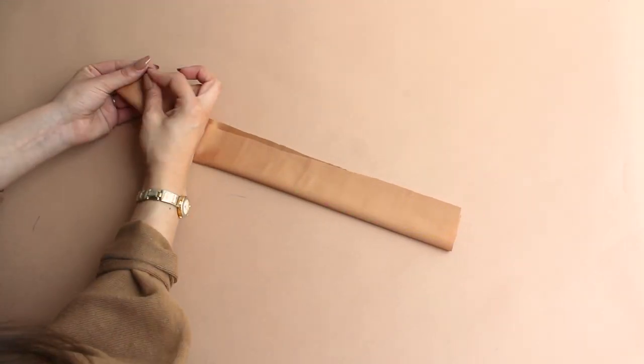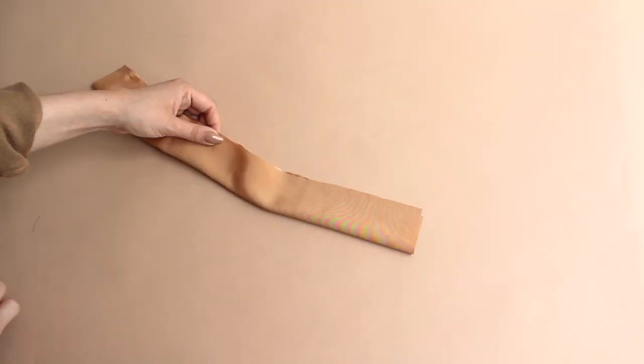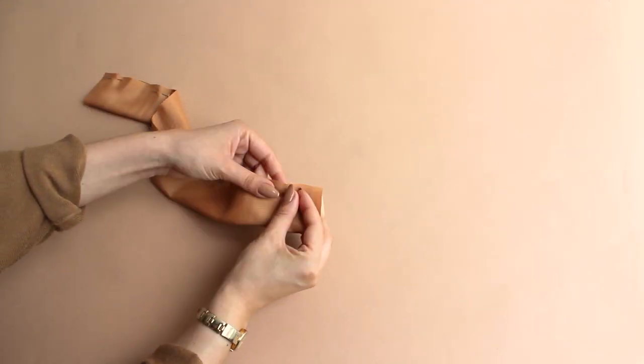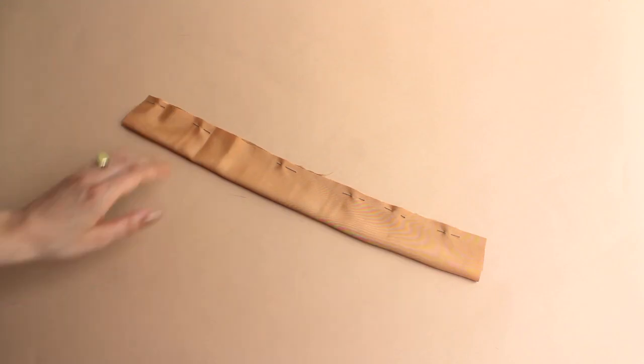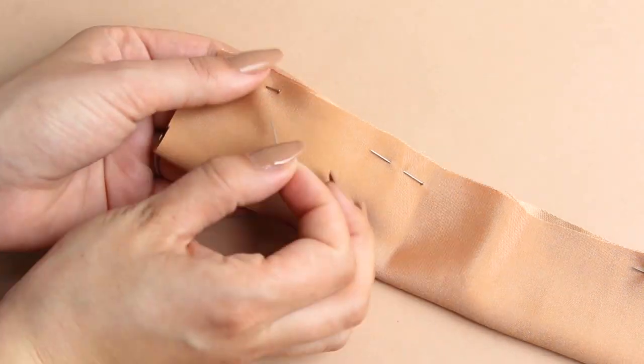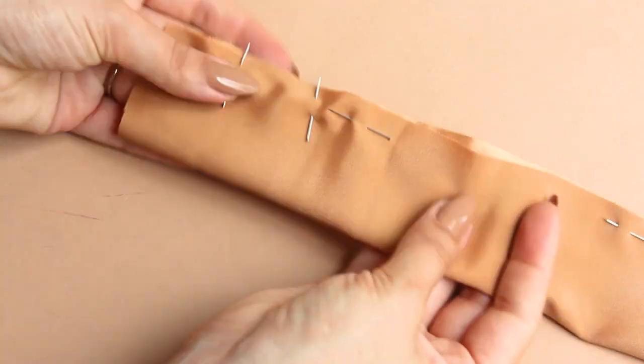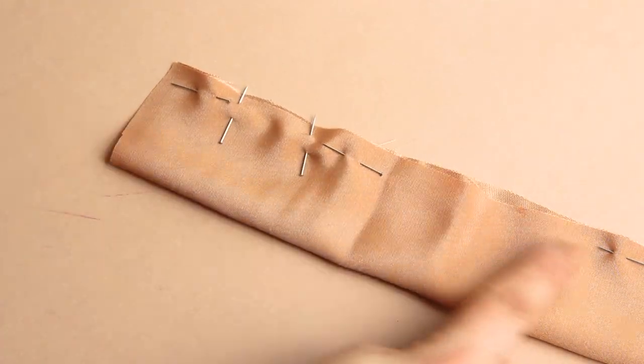Fold the strap in half and secure with pins at the beginning. Mark with pins approximately 3 cm gap, then stitch remembering to leave a gap.